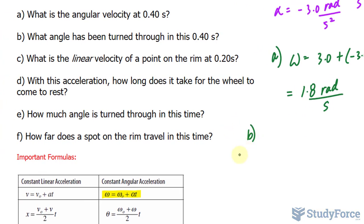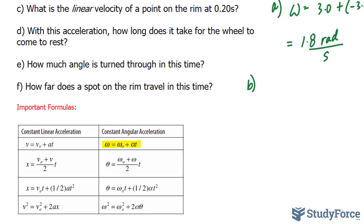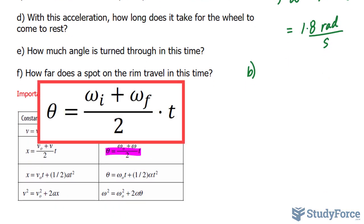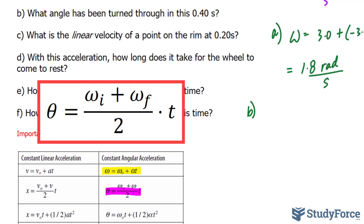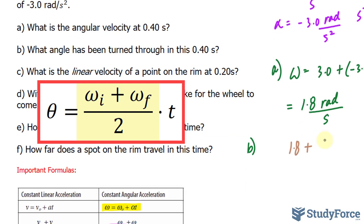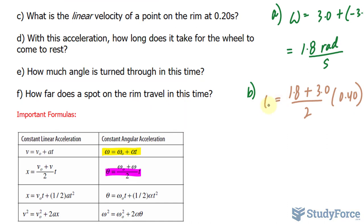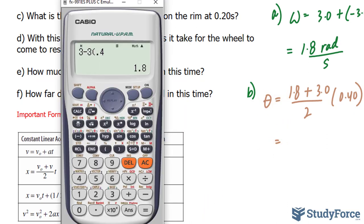In question B, what angle has turned through in this 0.4 seconds? So, using this relationship now, we can find the angle by taking the average of 1.8 and 3.0. You see how we add and divide by 2, that's like taking the average, and multiplying it by 0.4. This will give us the angle in radians.